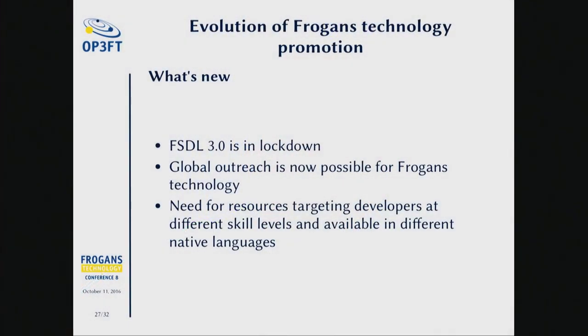We are locking in the FSDL language. That's great, because now we can start talking to the world. The end of October has been announced, to be confirmed. What's important is that now we can tell developers: ladies and gentlemen, you can develop Frogan's sites. You have a guarantee that they will be accessible and visible — just like that — for six months, six years, twenty years. This is not a promise we could make up until now.